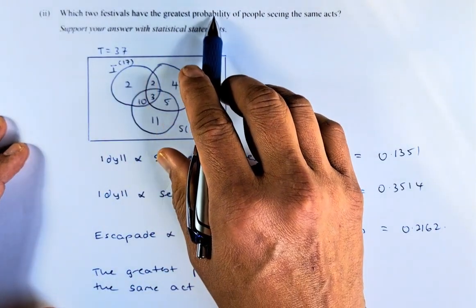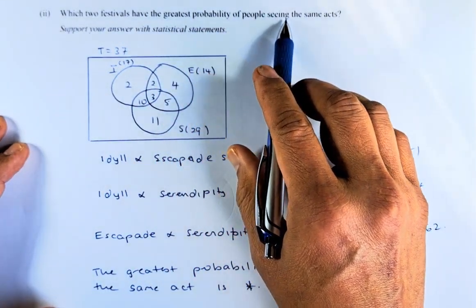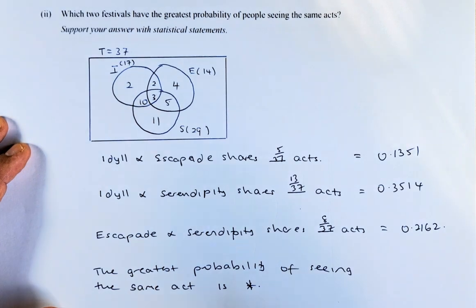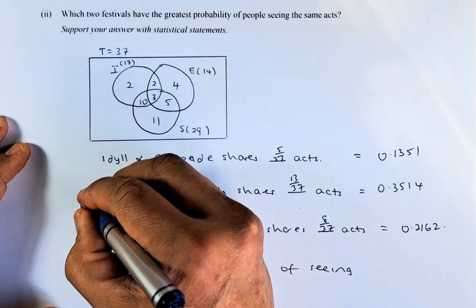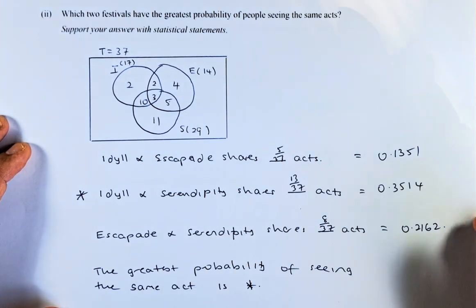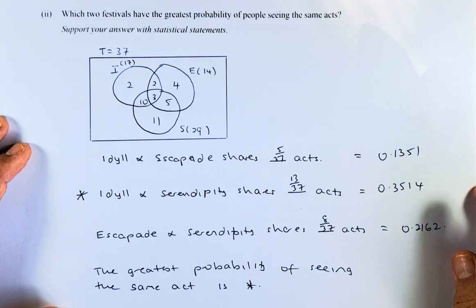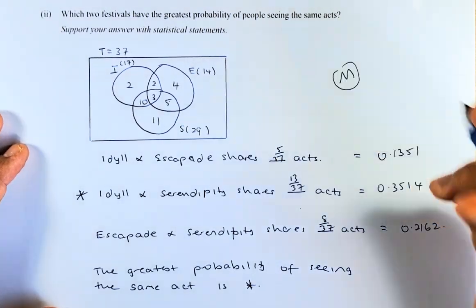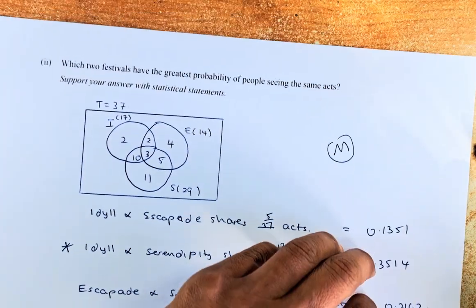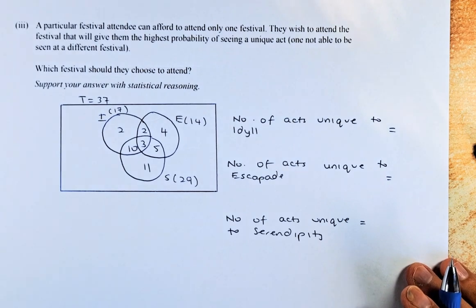So the question asks you, which festival has the greatest probability of people seeing the same act? So the answer is going to be, this is 0.13, 0.35 and 0.21. And the answer is going to be Idyll and Serendipity because they have the highest probability. So that is the merit. And now we are going to do the last achieved question, which is part 3 of the same question.